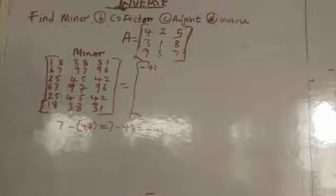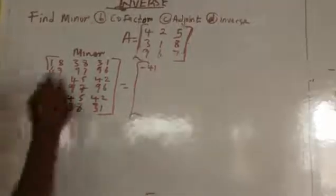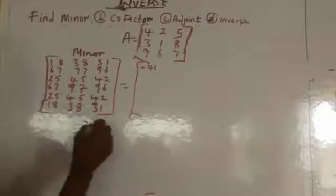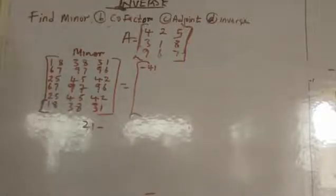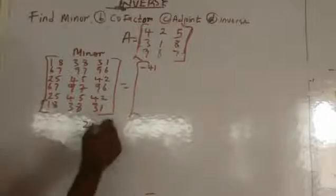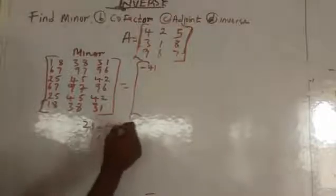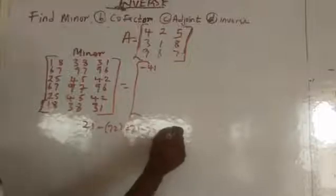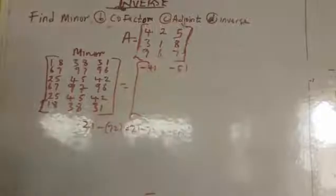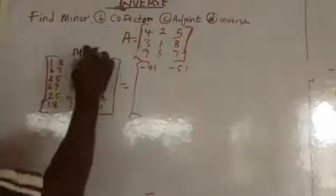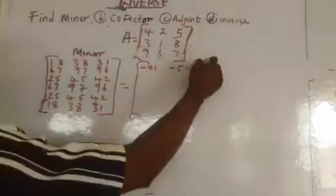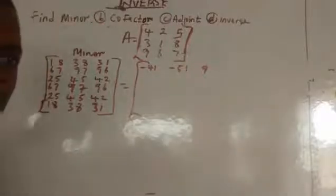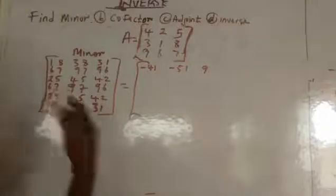Applying the same method, we find the subdeterminant for the next element: 3 times 7 is 21, minus 9 times 8 which is 72. So we have 21 minus 72, which gives minus 51. Using the same method for the next determinant, we get 9. We've done determinant of 3 by 3 in our previous video — please go and watch if you don't understand it yet.